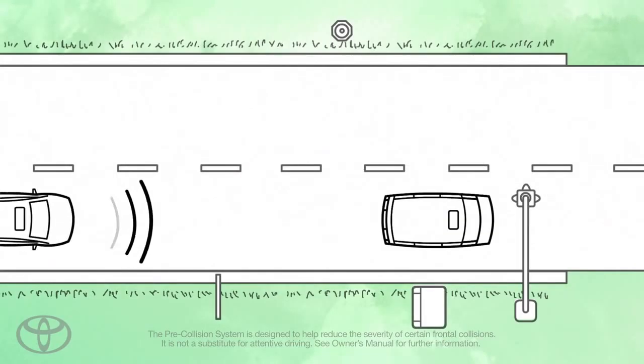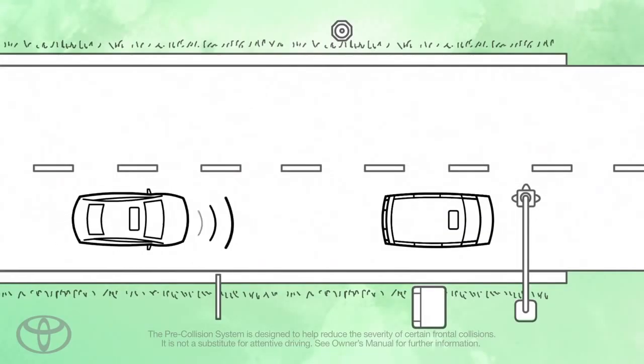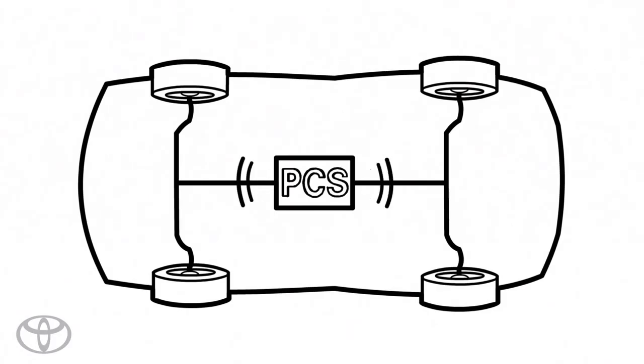When the radar senses a high probability of frontal collision, a sensor behind the grille alerts the driver with a warning light, alarm, and a message in the instrument display to apply the brakes, which are then prepped for maximum braking force.